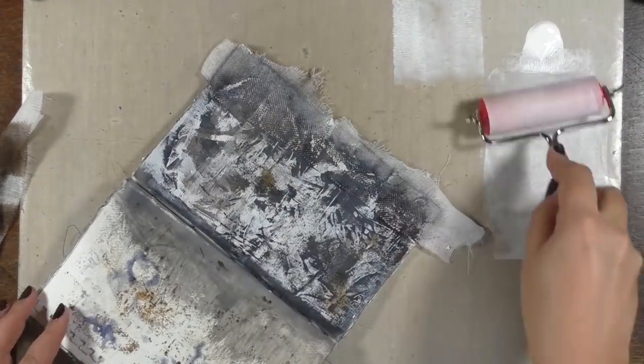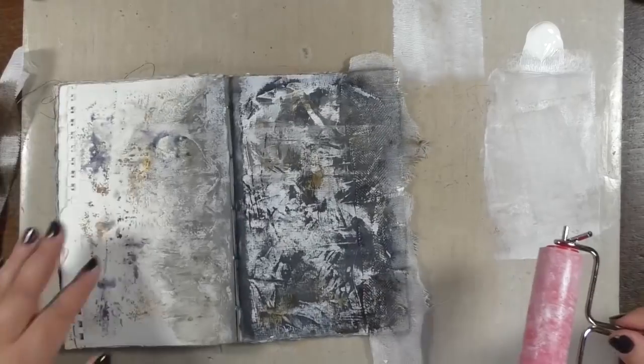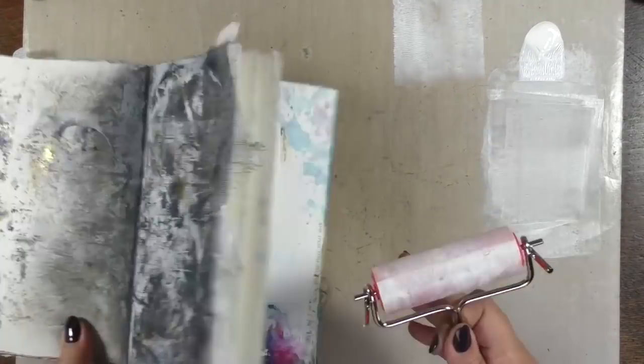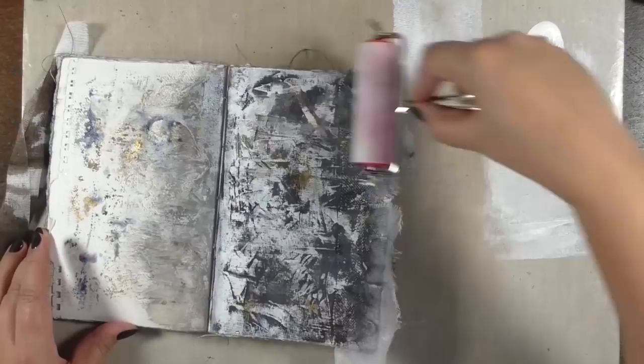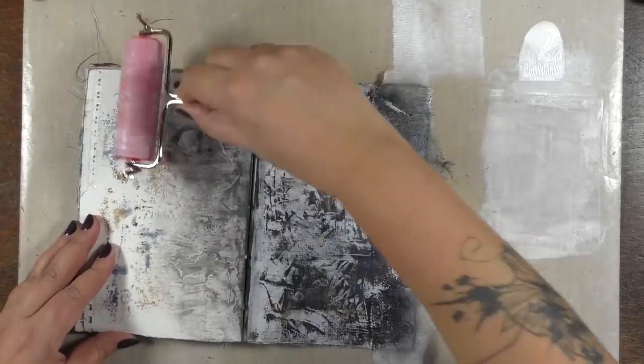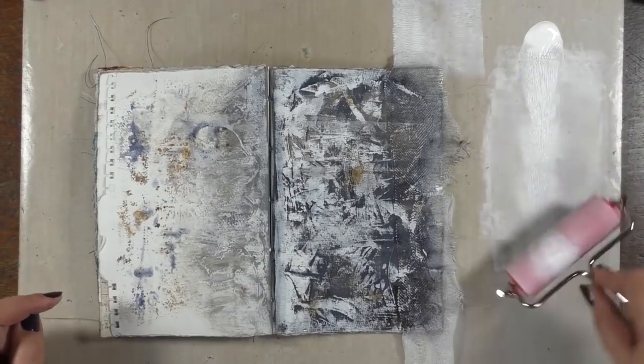Just applying some white chalky finish with a brayer. And of course I'm not going over the nice things that I have going on completely on the left of this spread, so I'm focusing more on the right and a little bit on the center.